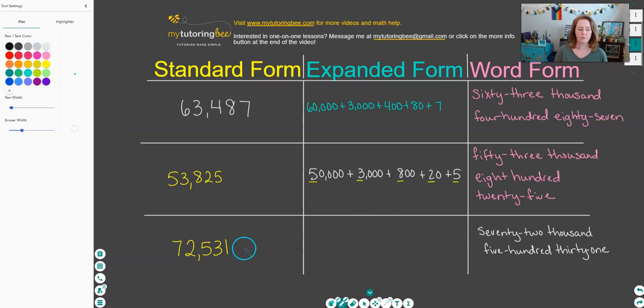So now expanded form. I like to do expanded form from standard form. You certainly could have done expanded form first. So our 70,000 goes first because that seven is in the 10,000 place. Plus we've got 2,000 from the two in the thousands place. We've got five in the hundreds place, so that represents 500. We've got three in the tens place, so 30, and then one in the ones place.